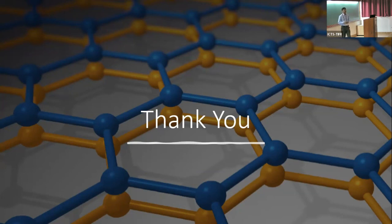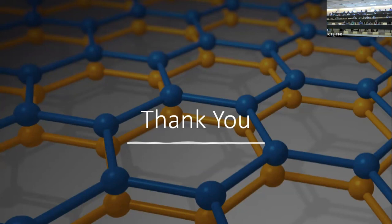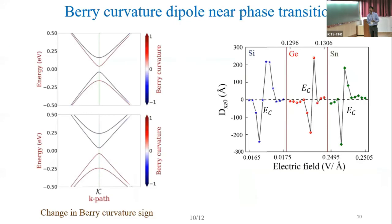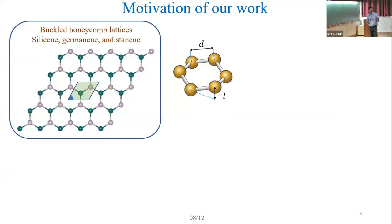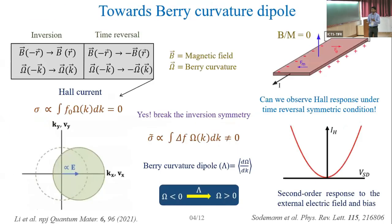I have a quick question about how do you actually calculate the Berry curvature dipole? I understand how the Berry curvature is calculated, but how do you compute the dipole? It is actually the derivative of that Berry curvature with respect to Kx. It is basically the first moment of the Berry curvature.